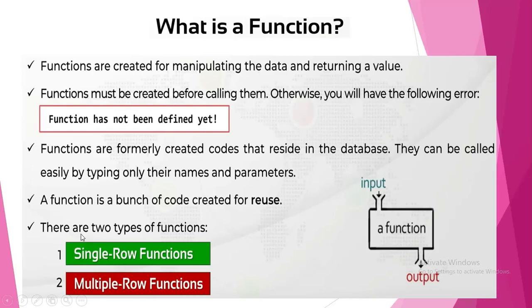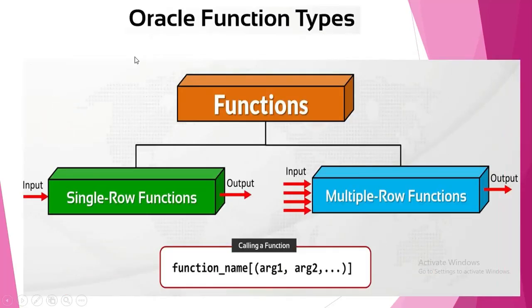You can see here the function, we provide some input and we are getting output. So there are two types of functions: single row functions and multiple row functions. Oracle function types, functions divided broadly into two categories. For single row functions, one input and you are getting one output. For multiple row functions, you are having many inputs and only one output. So here function_name with argument one, argument two, it continues like this.